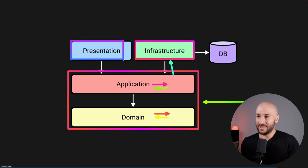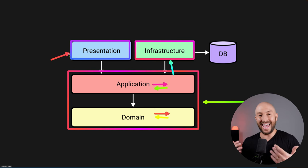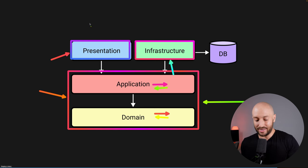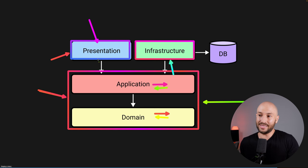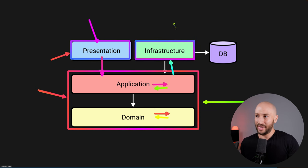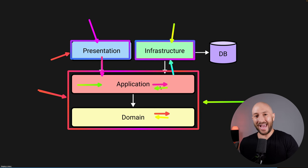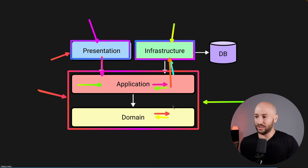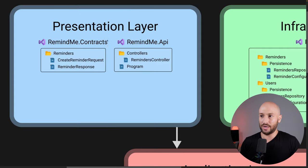The beauty of these architectures is that with clear dependencies between layers, we can replace the underlying technology or framework in the outer layers without affecting the inner layers. For example, we can switch the presentation layer from a REST API to a GUI without affecting the business logic. The answer to how this works is that the inner layers define interfaces and the outer layers define the implementation. So the application layer defines an interface for interacting with the database, and the actual implementation sits in the infrastructure layer.